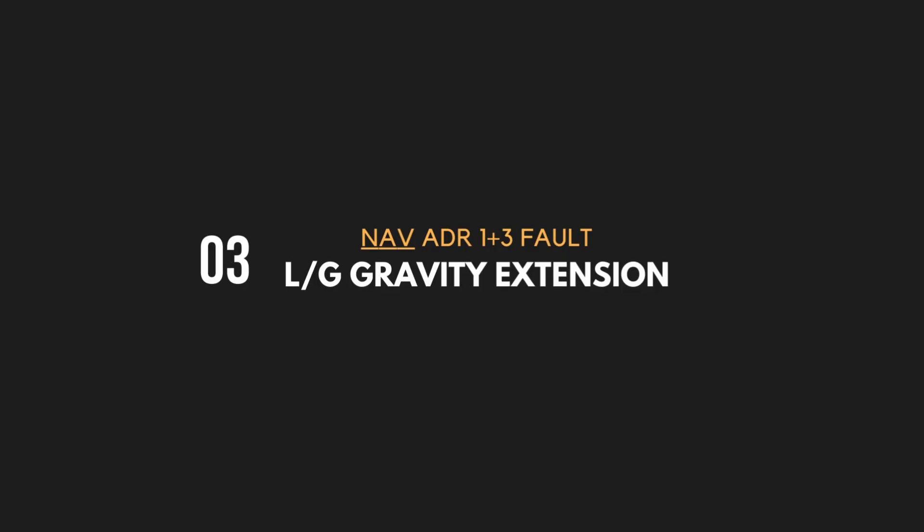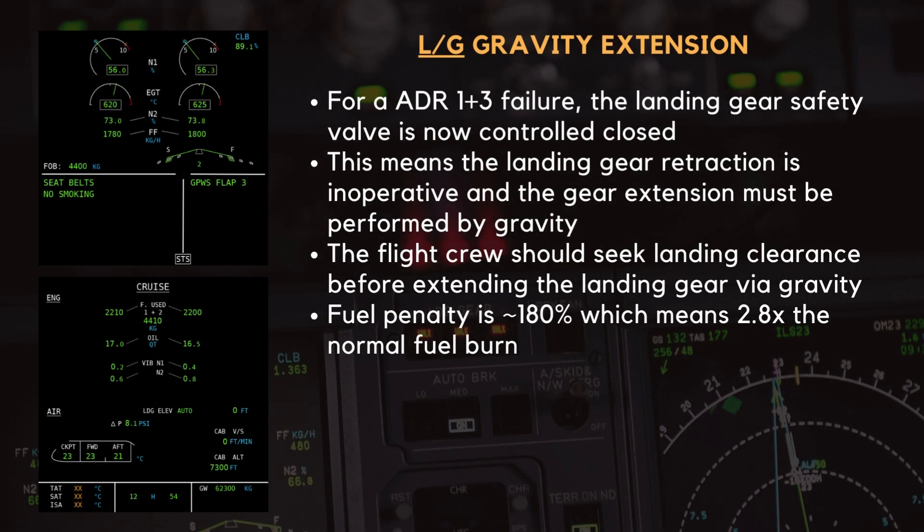Let's have a quick look at the gravity gear extension procedure. For this failure, the landing gear safety valve is now controlled closed. This means the landing gear retraction is inoperative and the gear extension must be performed by gravity. The flight crew should seek landing clearance before extending the landing gear via gravity. The fuel penalty factor is approximately 180%, which means the aircraft will be burning 2.8 times the normal fuel burn.